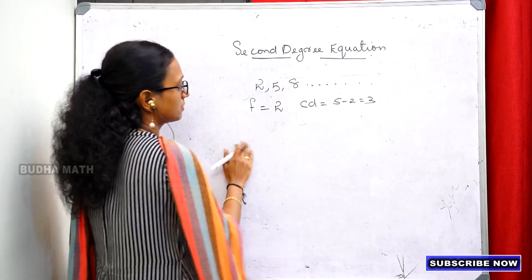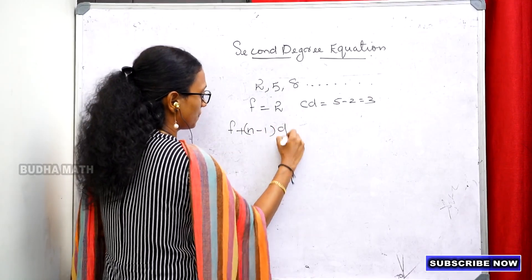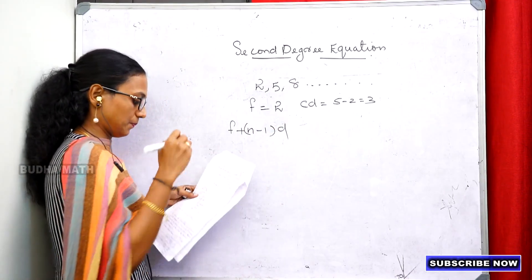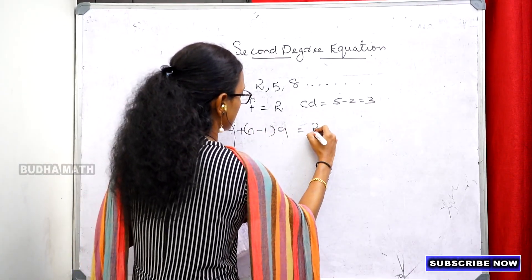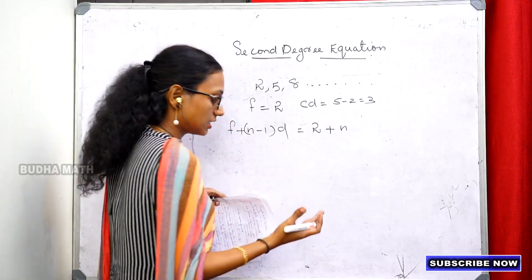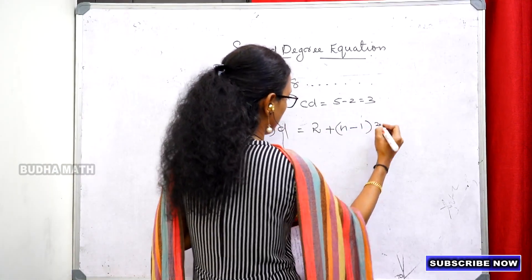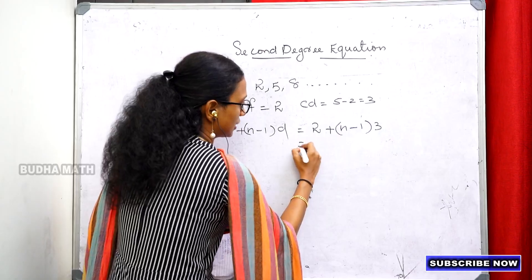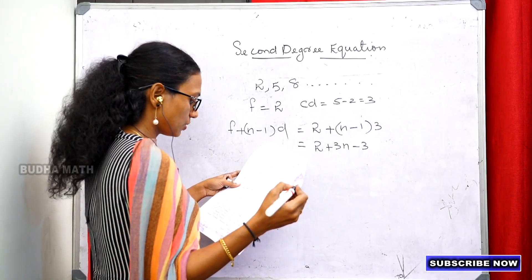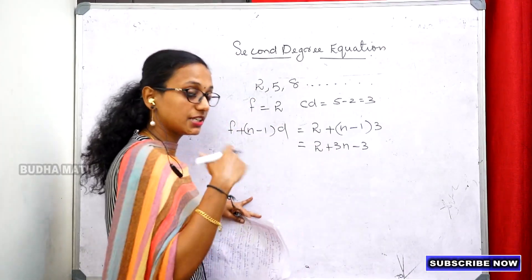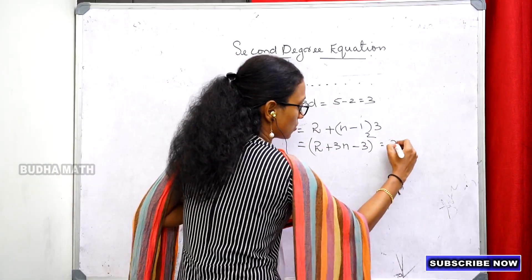Using the nth term formula: nth term equals f plus (n minus 1) times d. Substituting: nth term equals 2 plus (n minus 1) times 3. This term squared equals 2,500.